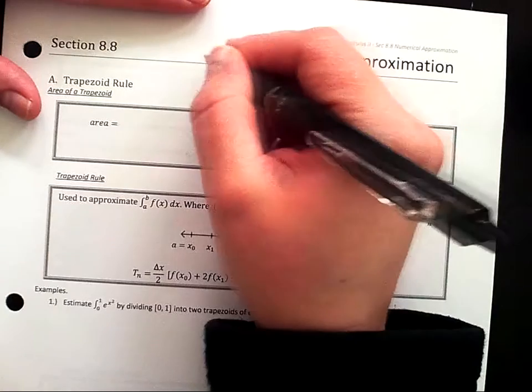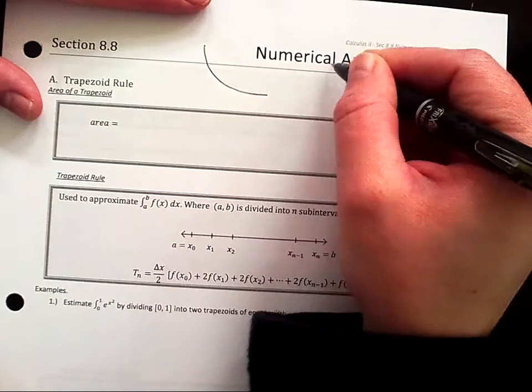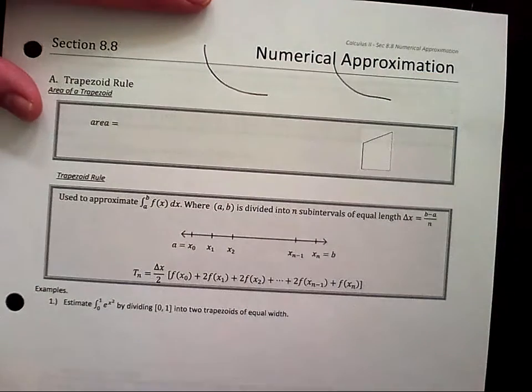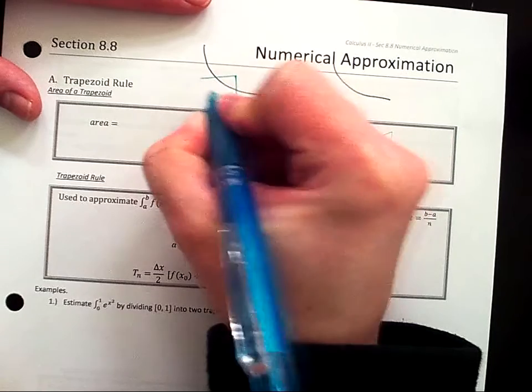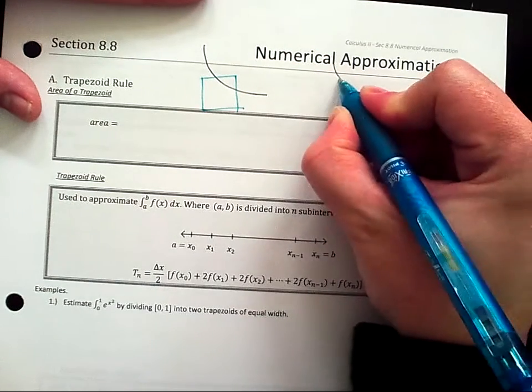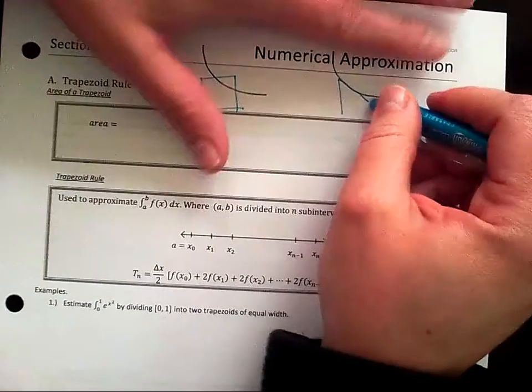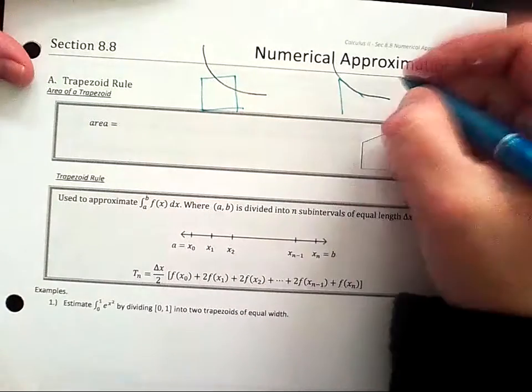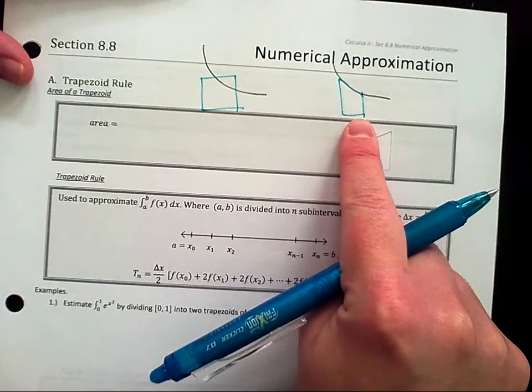Right? Like, if I have some sort of a curve like this, if I draw a rectangle for it, even if I do the midpoint rule, or if I do a trapezoid, oops, I'm not very good at the drawing, but if I do a trapezoid, it seems like there's less area here, right?